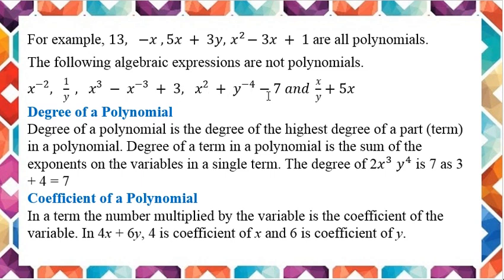Similarly, x squared plus y to the power minus 4 minus 7. And x upon y plus y minus 5x — in the last example again, y is in the denominator. When you take it to the numerator, it becomes minus 1. So these are not polynomials.